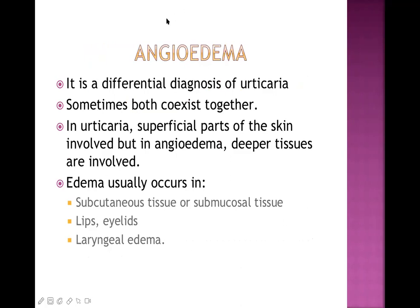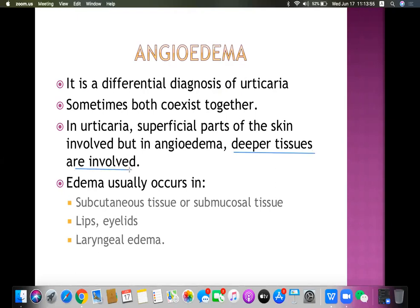Another important condition is angioedema. Angioedema looks like urticaria but there is a key difference - in some patients both coexist. In angioedema, deeper tissues are involved more commonly, specifically the deeper parts of the dermis and subcutaneous layer. In contrast, urticaria involves the superficial part of the dermis. In angioedema, subcutaneous tissue or mucosal tissue is involved.